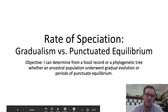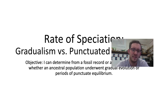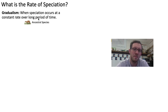Hey, BioTeam. One of the questions that evolutionary biologists face is how long it takes speciation to occur. There are two general speeds at which speciation can occur. One of them is called gradualism, which is when new species are created over a long period of time at a constant rate.